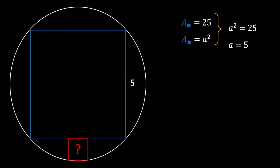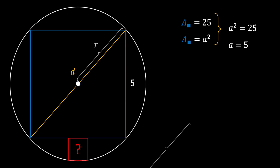Now let's draw a diagonal line and mark it as D. Let's also draw the center of the circle. We can notice that this center divides our diagonal into two identical segments, which represent the radius of our circle.